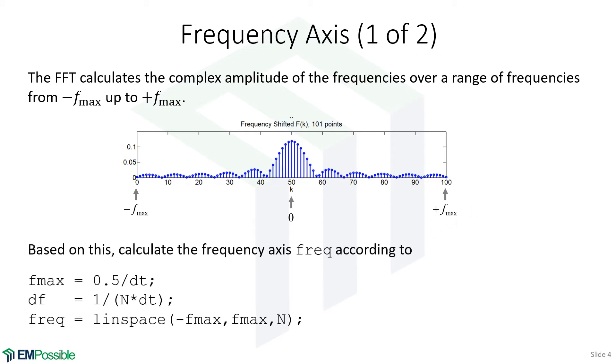Here's the MATLAB code to do that. First, we'll calculate our maximum frequency as 0.5 over the sampling period. We'll then calculate the frequency resolution, which is 1 divided by the number of samples times the sampling period. And now finally, our frequency axis. We will use the linspace or linear space command in MATLAB, and we will go from minus f max up to positive f max in N steps.